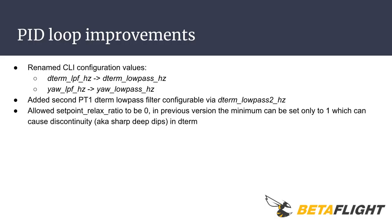PID loop improvements. The values for the Dterm low-pass filter and the low-pass filter will be renamed in Betaflight 3.4. There is also a second PT1 Dterm low-pass filter added, configurable via dterm_lowpass2_hz. Also, the setpoint relax ratio is now allowed to be set to 0. In previous versions the minimum could only be set to 1, which could cause discontinuity — sharp deep dips — in Dterm.